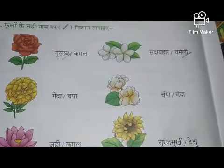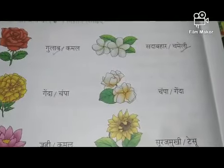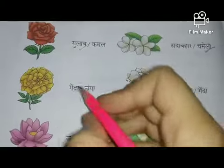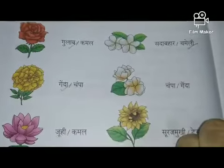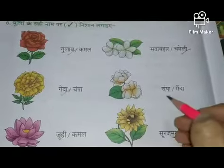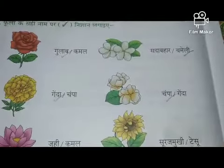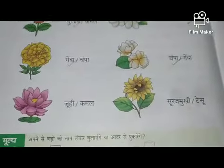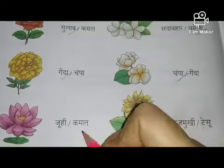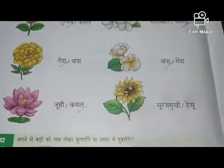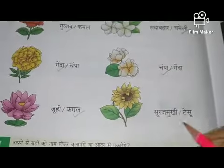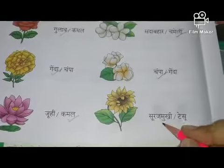Gulab. Then next flower — which flower is called Genda and Champa? Very good — Genda. Then which flower is called Genda and Champa? Champa is the correct answer. Then which flower is called Juhi or Kamal? Very good — this is Kamal. Then which flower is called Genda and Tessu? Sooraj Mukhi hai — very good — Sunflower.